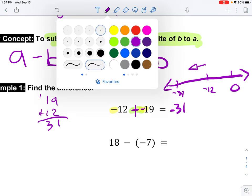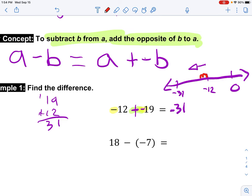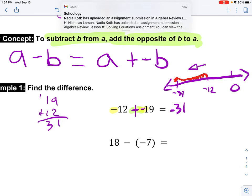So if we did it on our number line, it'd be like negative 12, negative 13, 14, 15, 16, 17, 18, 19, 20, 19 times till we got to negative 31.